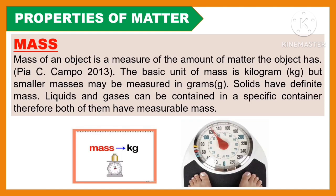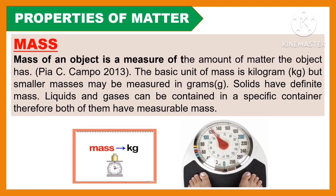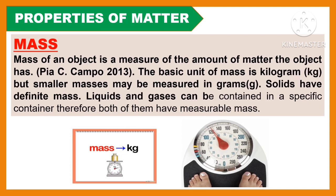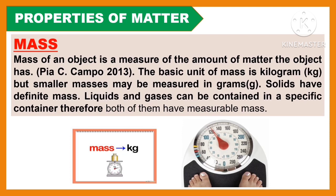The first property of matter is mass. Mass of an object is a measure of the amount of matter in the object. The basic unit of mass is kilogram, but smaller masses may be measured in grams. Solids have definite mass. Liquids and gases can be contained in a specific container; therefore, both of them have measurable mass.